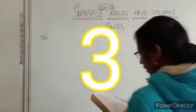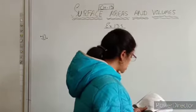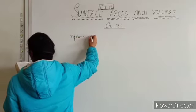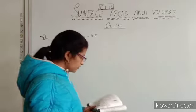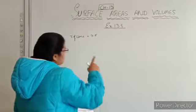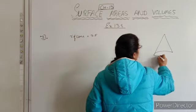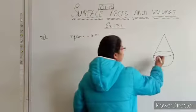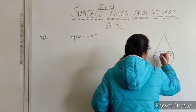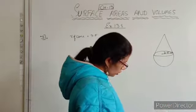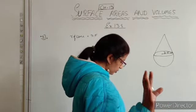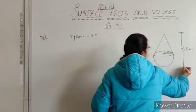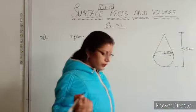The third question: a toy is in the form of a cone of radius 3.5 cm, mounted on a hemisphere of the same radius. The radius of both the cone and hemisphere is 3.5 cm. The total height of the toy is 15.5 cm from top to bottom. We need to find the total surface area of the toy.